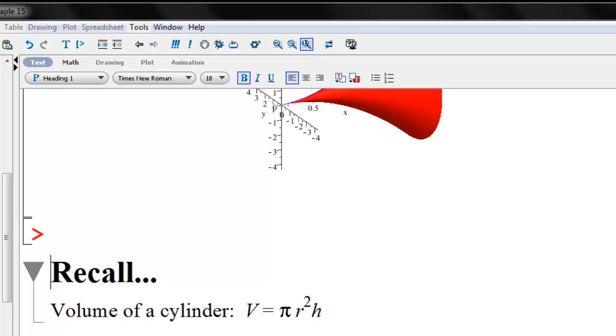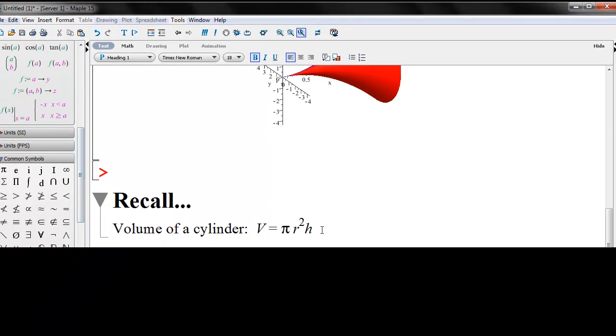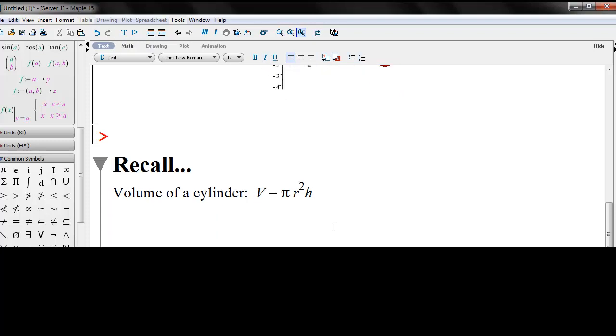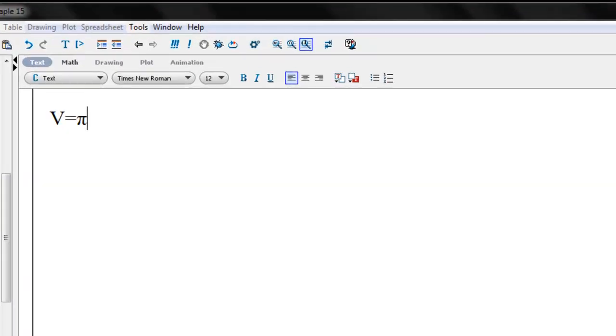Okay. So let's go back over here to Maple. And I'm going to give us some space so that we can work here. And what I'm going to do is I'm going to think about this volume equals pi r squared times the height. Okay. So let's think about what this means. Well, we have pi. That's not going to change.